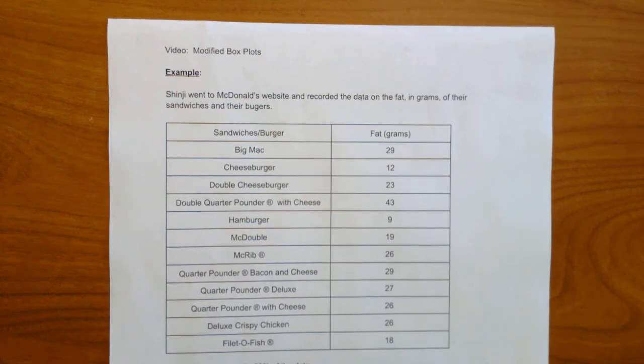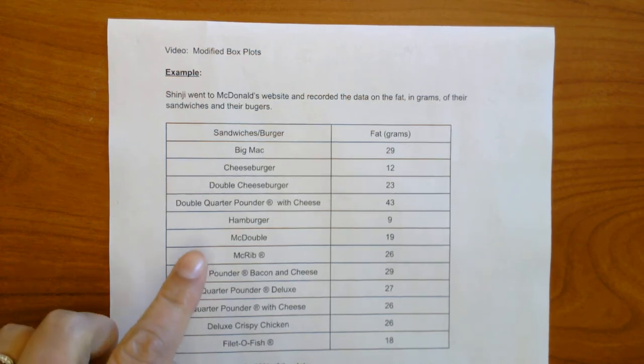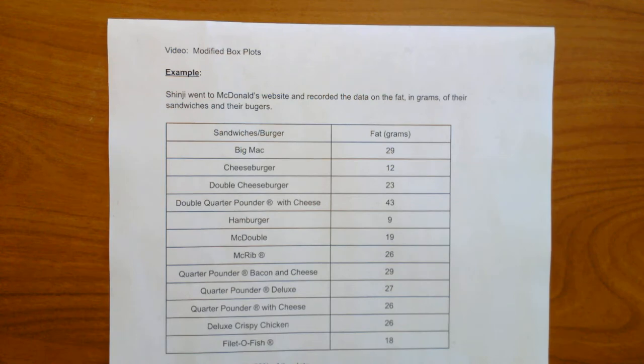Hello, this is Dr. Mears. Today we are going to be learning about modified box plots. Here's our example. Shinji went to McDonald's website and recorded the data on the fat in grams of their sandwiches and burgers. So here we have the sandwiches and burgers and here we have the fat in grams.